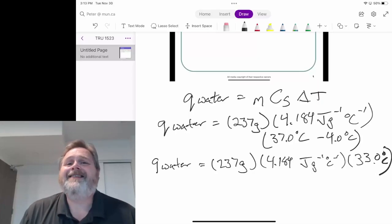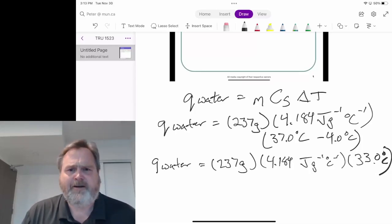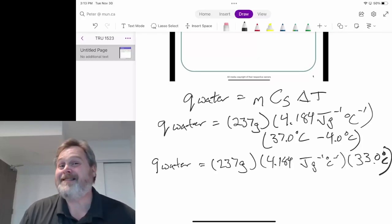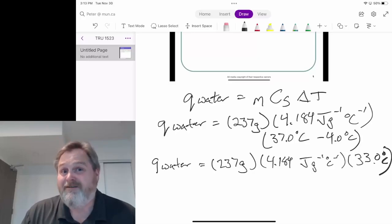The Kelvin temperature scale and the degree Celsius temperature scale are effectively the same size of units. The degree sizes are the same. The only difference is what we call the zero temperature. In the Celsius scale, it's the freezing point of water, zero degrees Celsius.